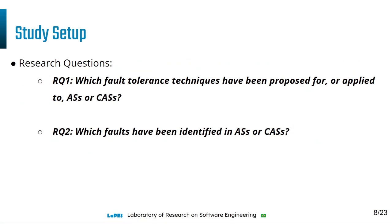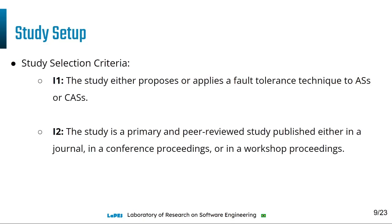We set out some research questions. The first research question is: which fault tolerance techniques have been proposed for or applied to adaptive systems and context-aware systems? The second research question is: which faults have been identified in adaptive systems or context-aware systems?